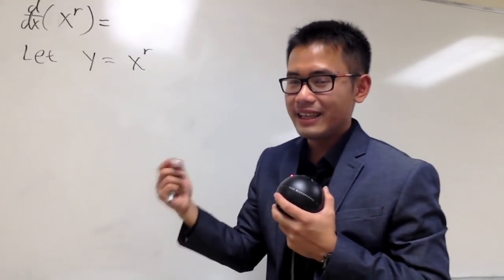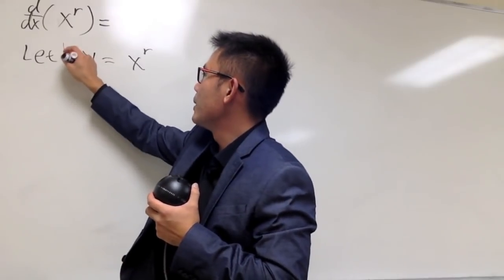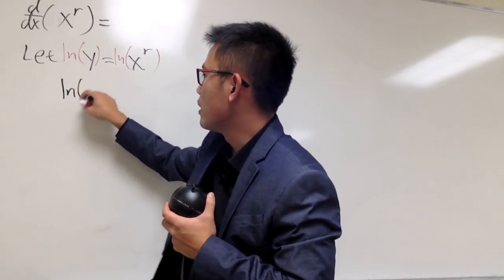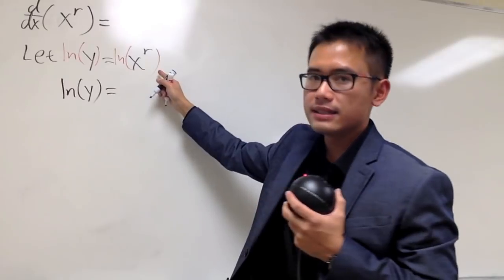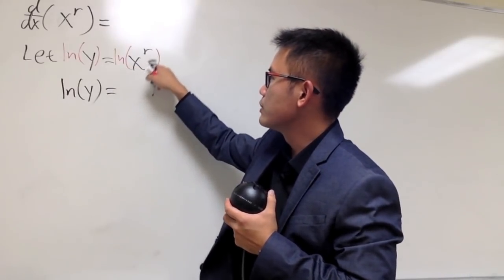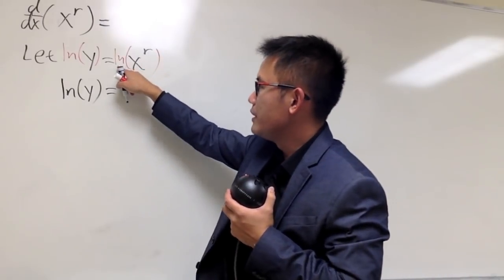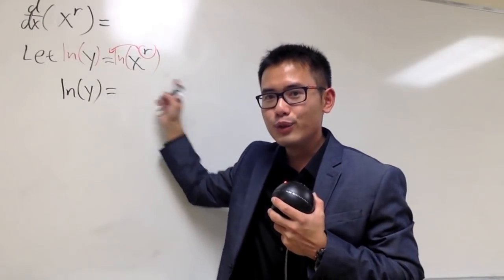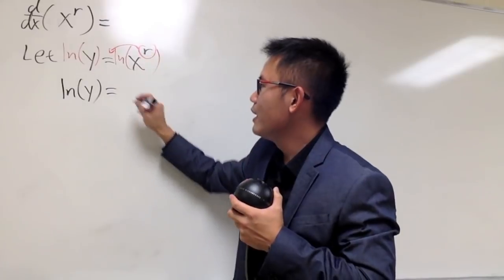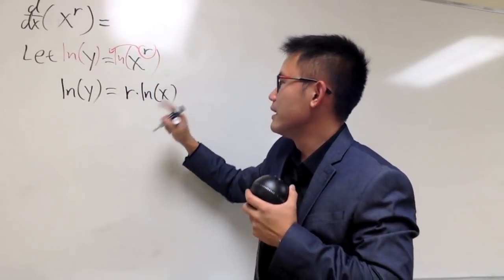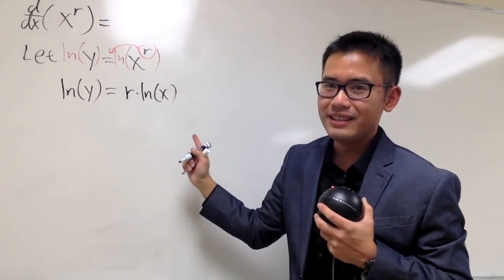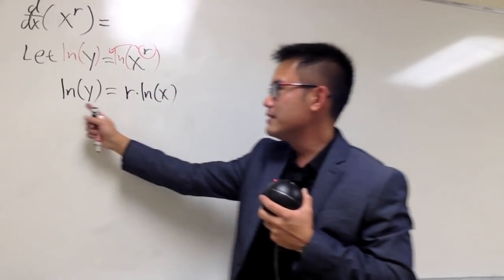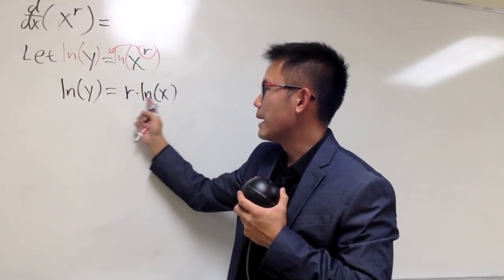I'll go ahead and take the natural log on both sides. On the left-hand side we have ln of y, and on the right-hand side we have ln of x to the r power. By one of the ln properties, we can take that power to the front — this has nothing to do with the power rule at the moment. So from here, we have r times ln x. This is just the ln property — you don't minus 1, you don't do anything like that. This is just basic algebra. So ln y is equal to r times ln x.